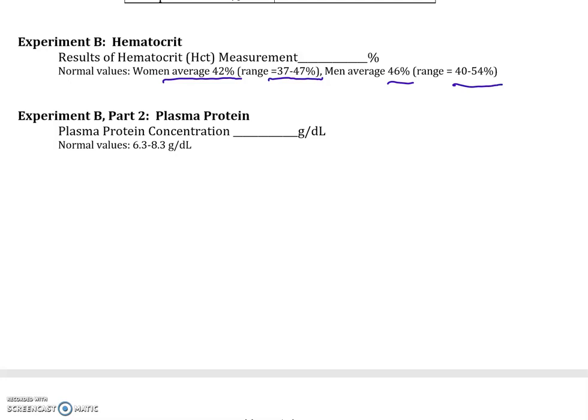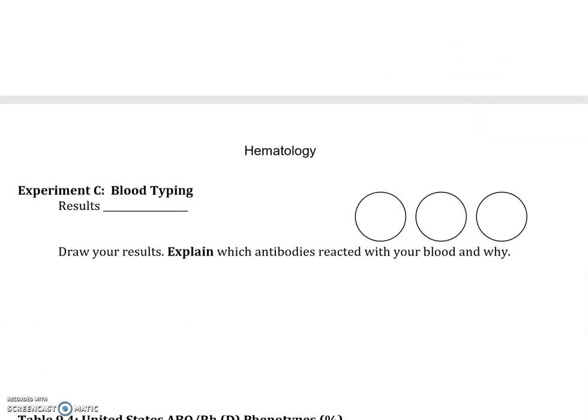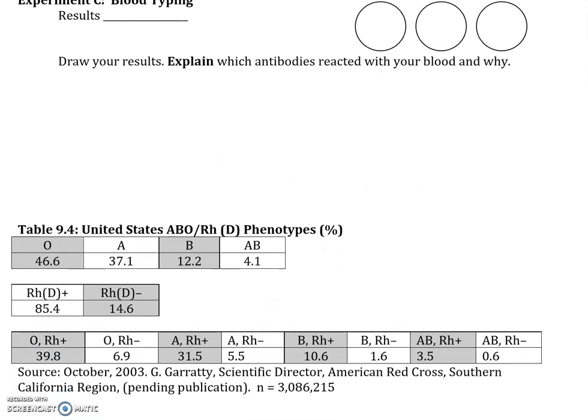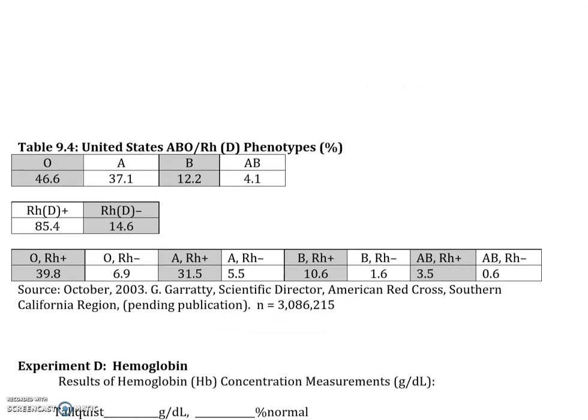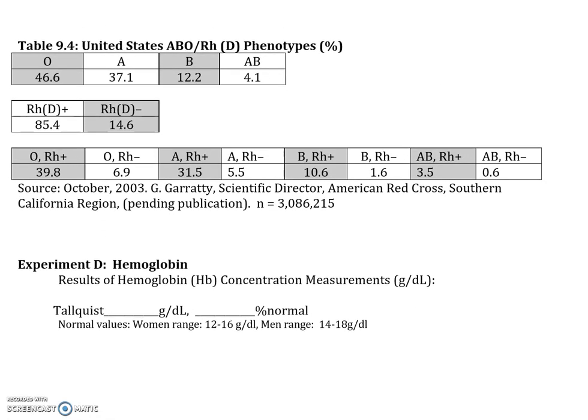Plasma protein concentration: I told you up front it's 7 to 9 grams per deciliter — percent by volume. The normal values given here are slightly off from that: 6.3 to 8.3 grams per deciliter. For blood typing results, you can draw those in. Population comparisons show that the majority of people in the United States have blood type O, followed by blood type A. Blood type B is relatively rare, and AB is the least common blood type.